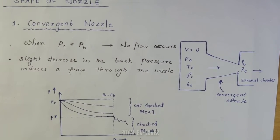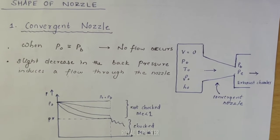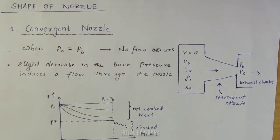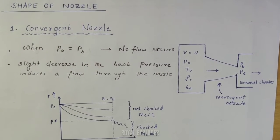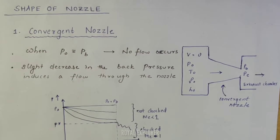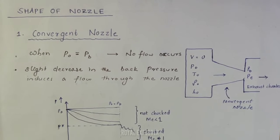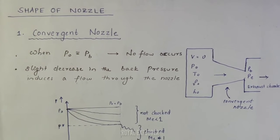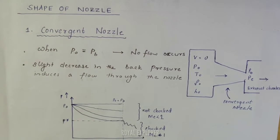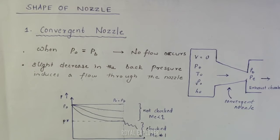Considering back pressure and inlet pressure: when P0 and Pb are equal, the flow is given. As back pressure decreases, velocity increases. At the critical condition P-star, the Mach number equals 1, and the flow reaches maximum mass flow rate. When the Mach number equals 1, the flow is choked — this is called choking flow.